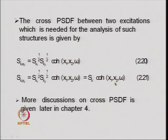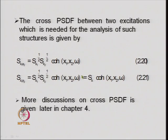For a very small distance between x1 and x2 and for small frequency, the coherence function approaches unity—perfect correlation. In that case, the cross-power spectral density function between the two points becomes the same as the power spectral density function of the ground motion. More discussion on the cross-power spectral density function will be taken up in chapter 4.